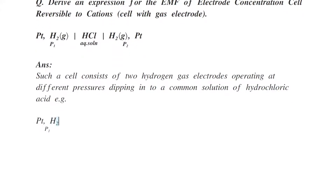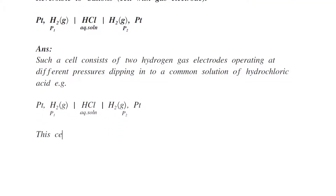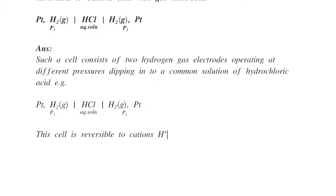The cell is represented as: platinum, hydrogen gas at pressure P1, HCl aqueous solution, hydrogen gas at pressure P2, in contact with platinum. This cell is reversible to cations, i.e. hydrogen ions.